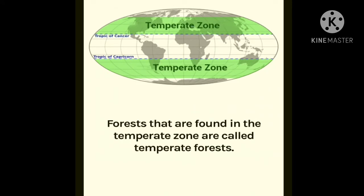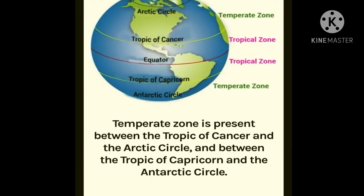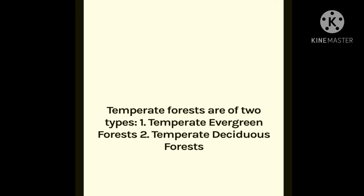In the next topic we are going to learn about temperate forests. Forests that are found in the temperate zone are called temperate forests. The temperate zone is present between the Tropic of Cancer and the Arctic Circle, and between the Tropic of Capricorn and the Antarctic Circle. Here you can see the tropical zone shown in pink and the temperate zone shown in green. Temperate forests are of two types.